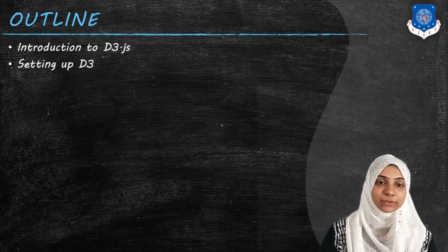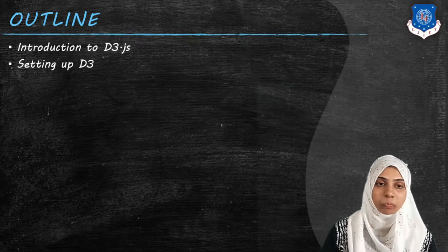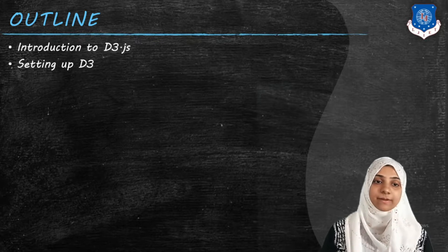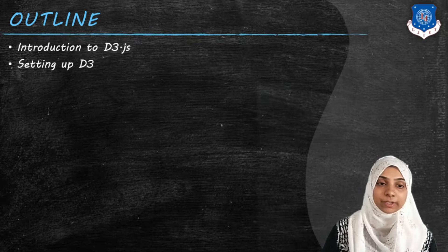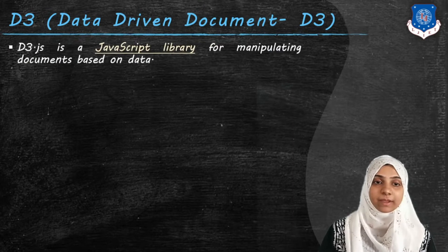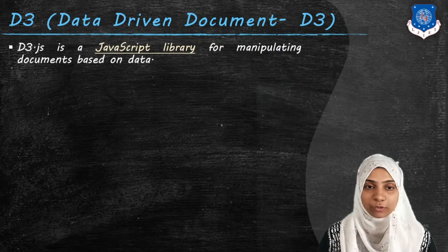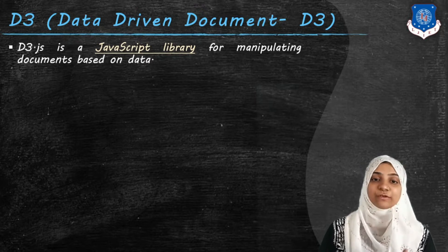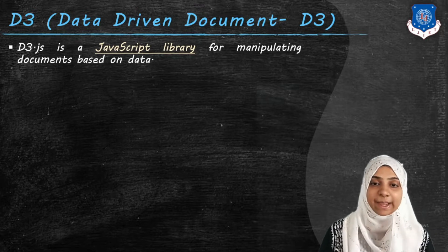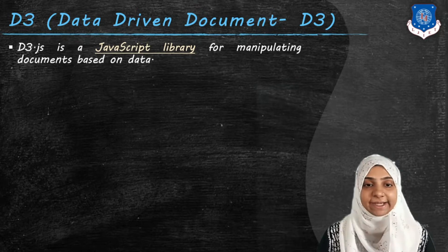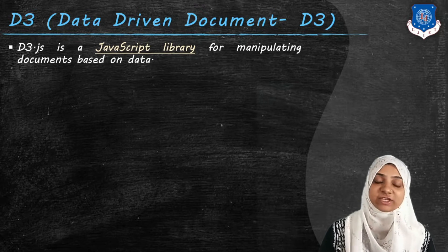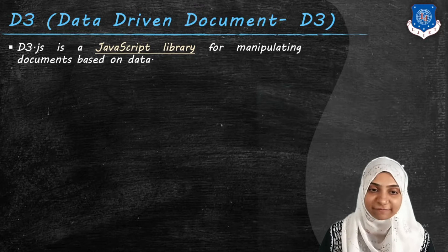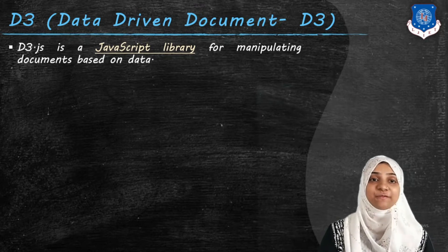Today we are going to study what is D3.js library and how to set up an environment to run a D3 program on an HTML page. D3 stands for Data Driven Documents — there are three D's in this term, which is why the library is named D3. It is a JavaScript library for manipulating documents based on data. This data can be internal to an HTML document or it can be an external file such as a CSV file, XML file, or any data file.